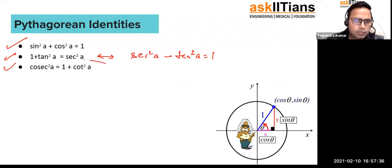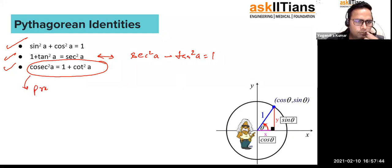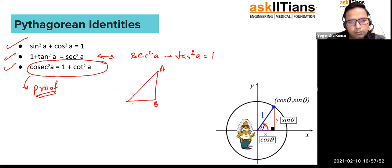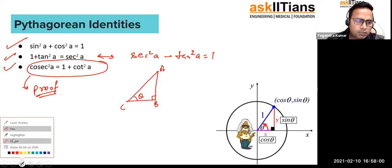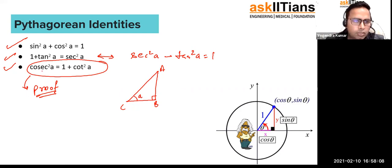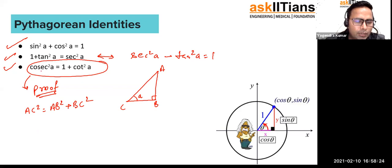Let's prove the third identity: cosec²A − cot²A = 1. We make a right angle triangle ABC with right angle at B, and let this angle be A. Starting with Pythagoras: AC² = AB² + BC². This time I want to get cosec, which is hypotenuse divided by opposite side, so let me rearrange to isolate AB: AC² − BC² = AB².